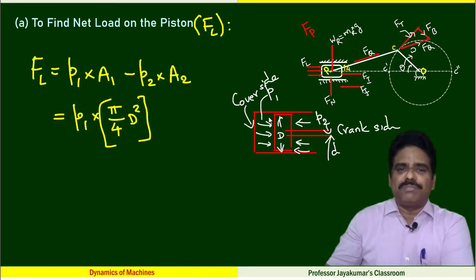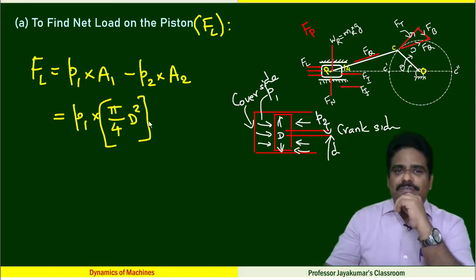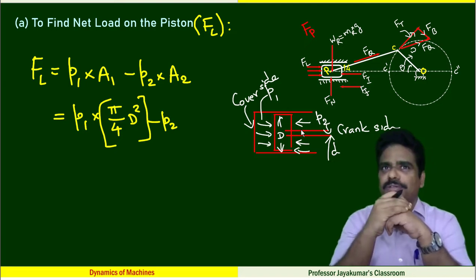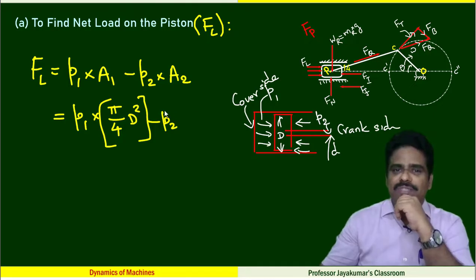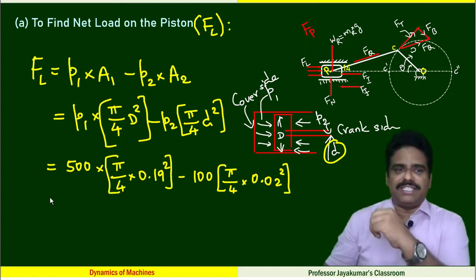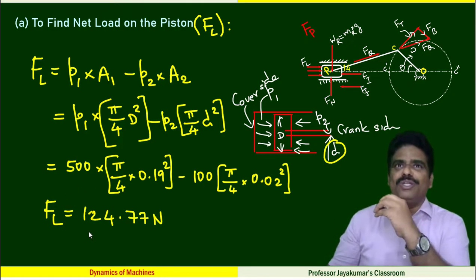Minus that side pressure, I have to deduct area of cross section of the small rod, piston rod alone. That I have to deduct. So that's why minus, the area is π/4 d². By substituting the given data, we will get answer 124.77 Newton is the FL.